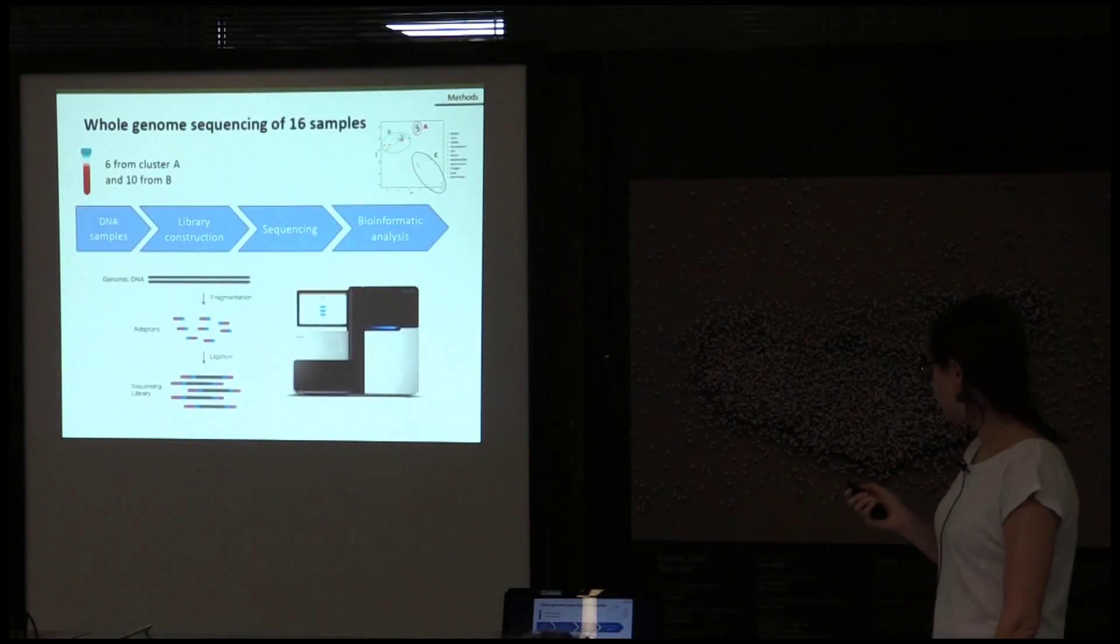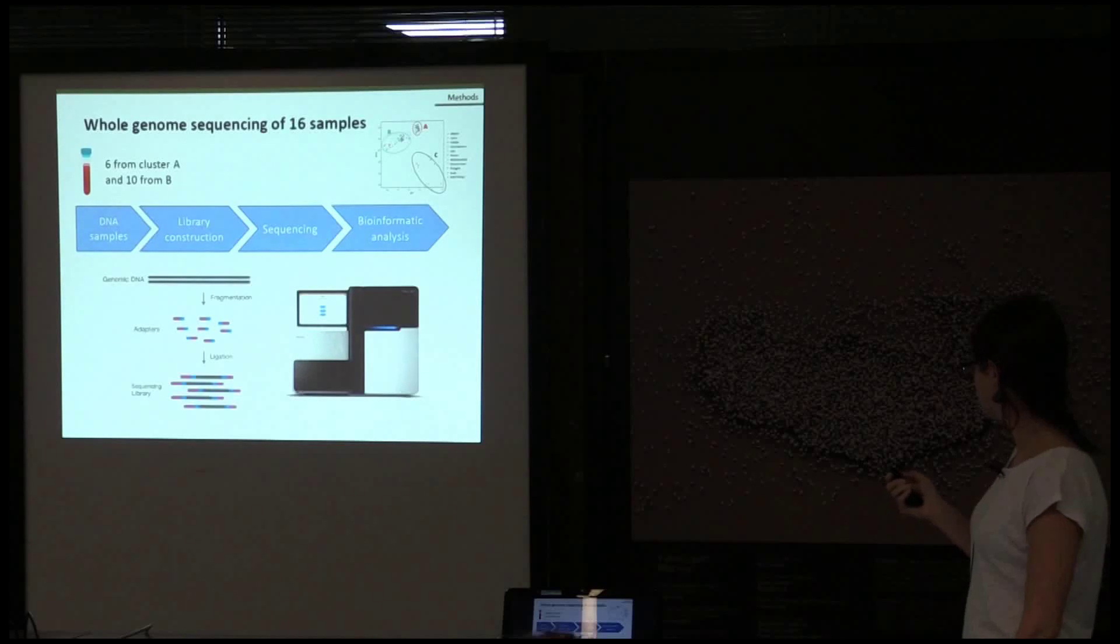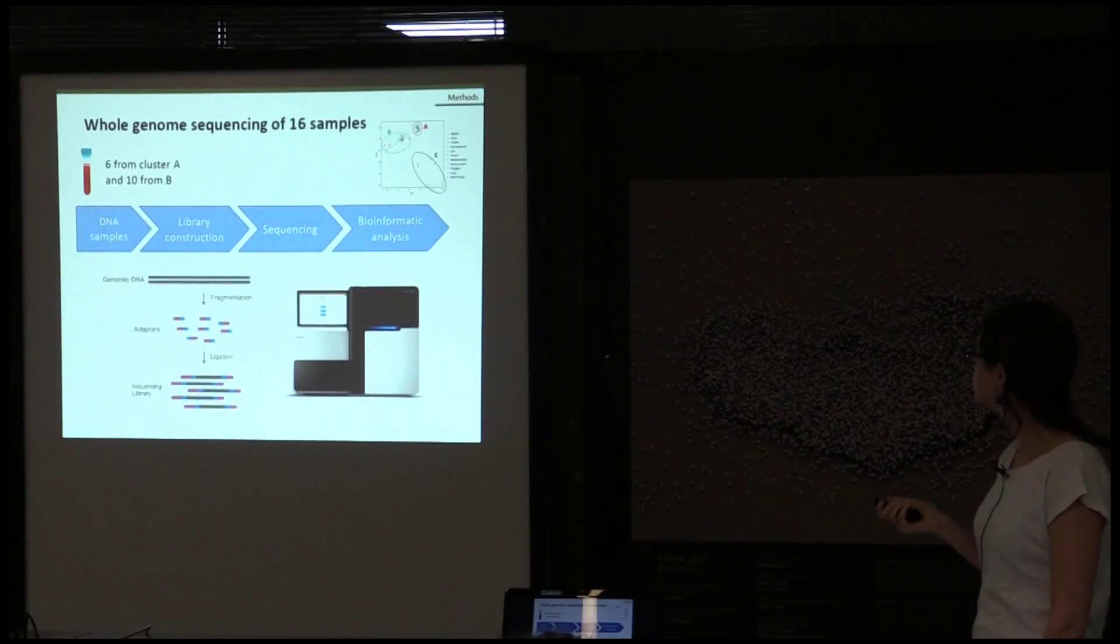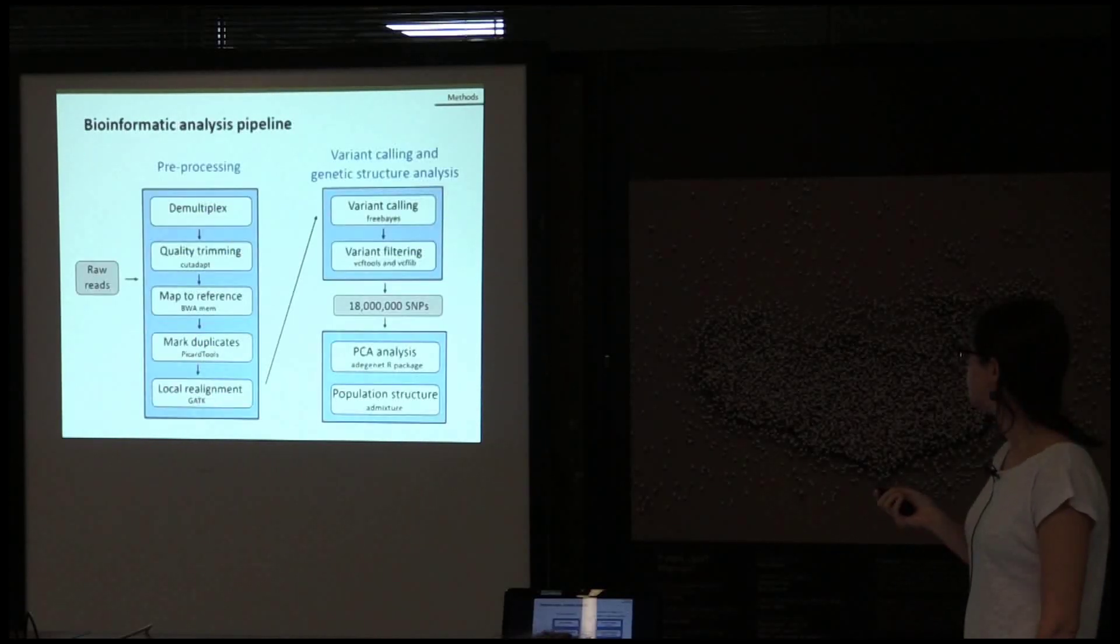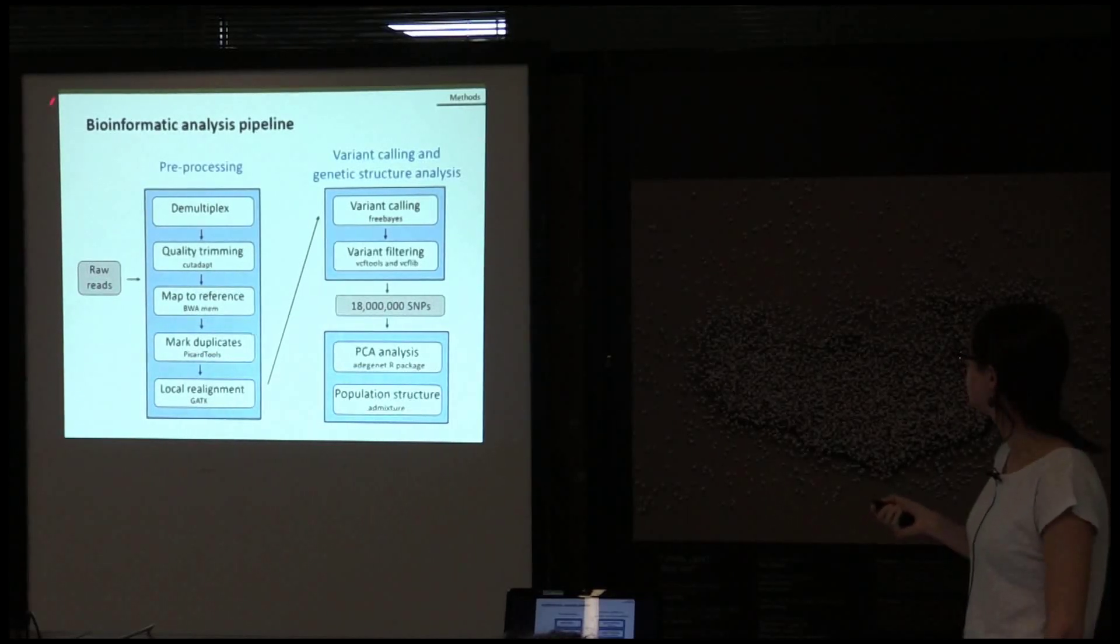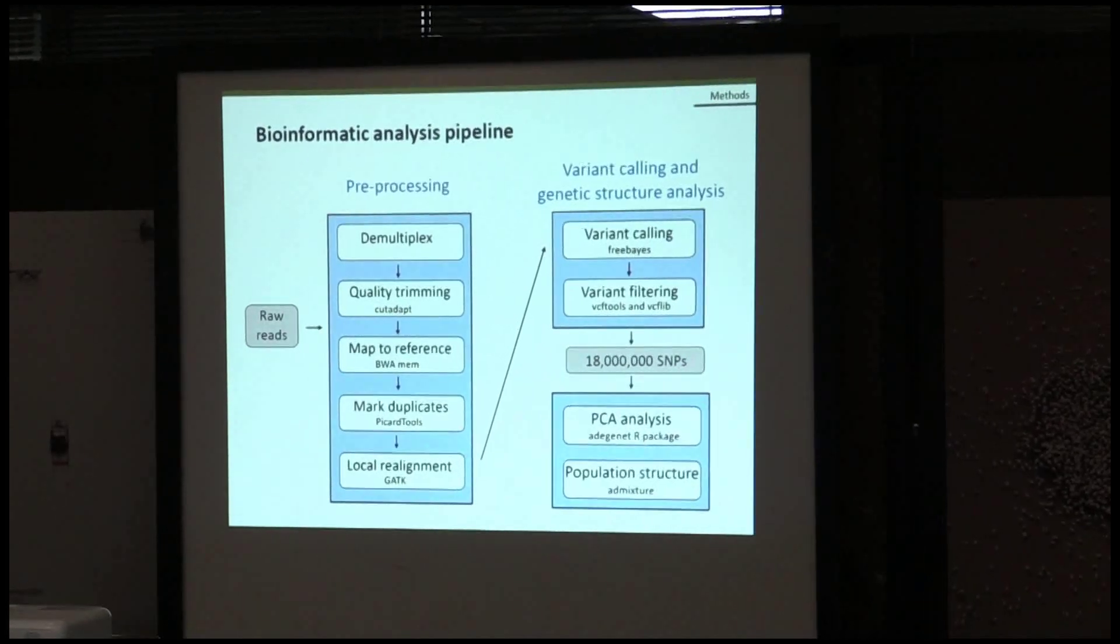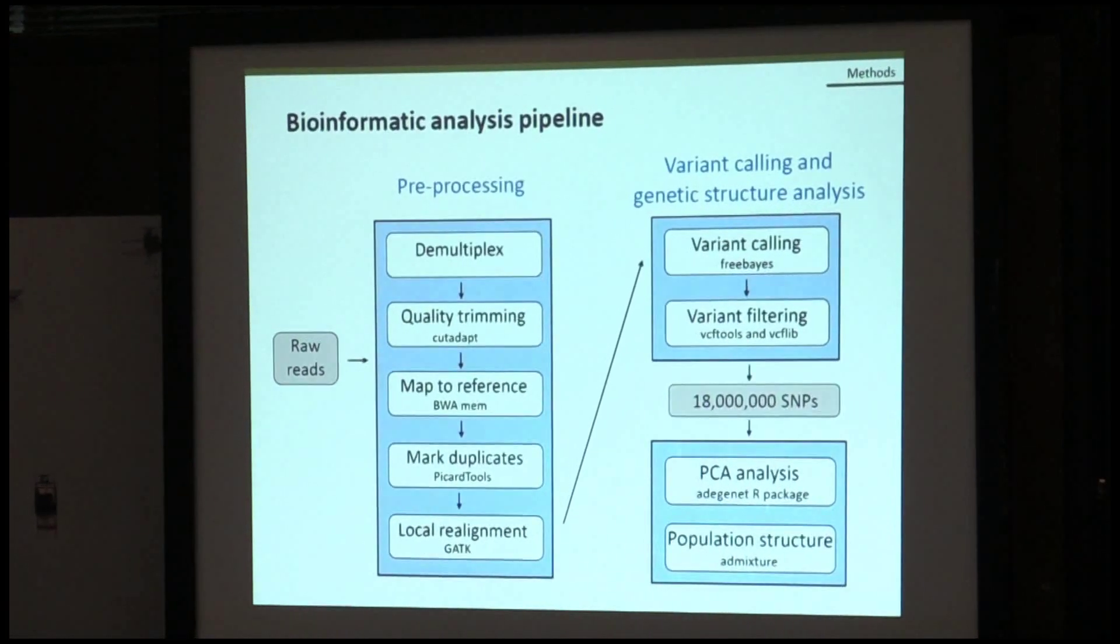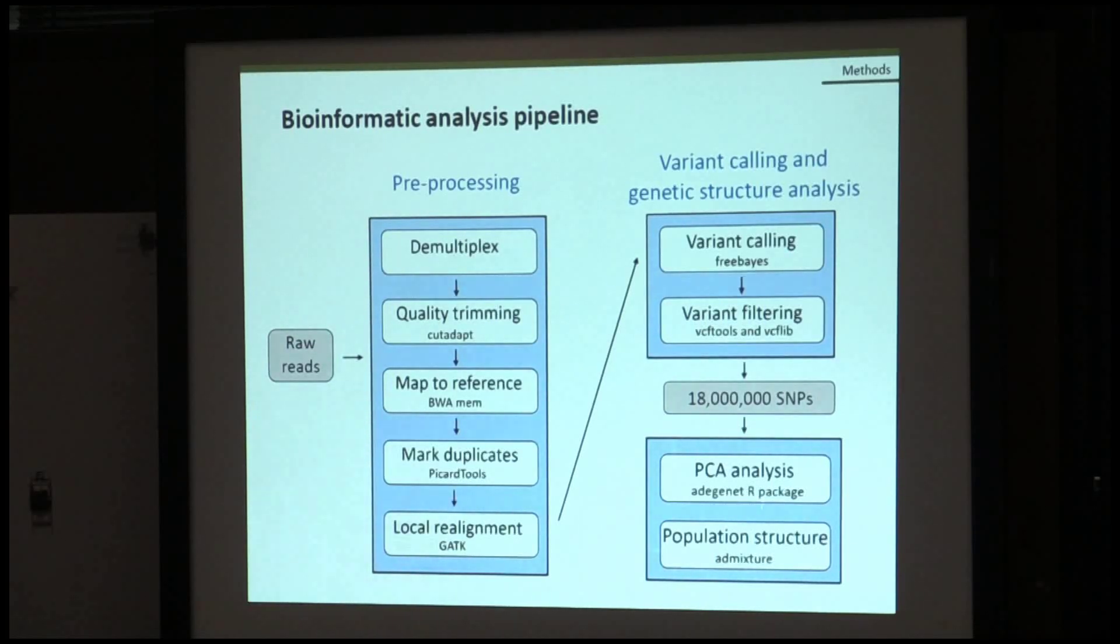To do this, we sequenced the whole genome of 16 individuals that were homozygotes for or without inversion, and we considered 6 from cluster A and 10 from cluster B. We extracted DNA from blood samples, we constructed a library here in LEM, and then we sequenced it with Illumina iSeq. After obtaining the raw reads, we pre-processed the data, and we mapped them against the Japanese quail genome, as there is no genome available for the common quail. Then we called variants, and finally we obtained 18 million SNPs.